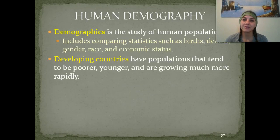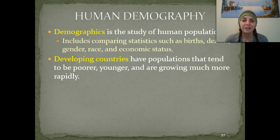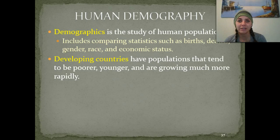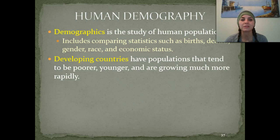Next, we're going to be discussing human demography. Demographics is the study of human populations, and it includes a lot of statistics. We're going to compare birth rates and death rates, genders, race, and economic status — all of those get clumped together in the study that we call demographics.